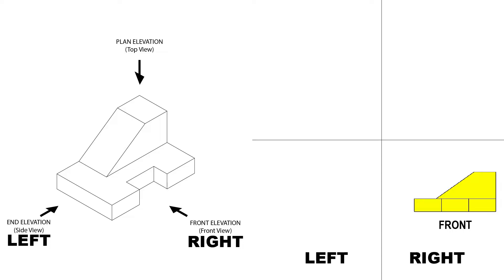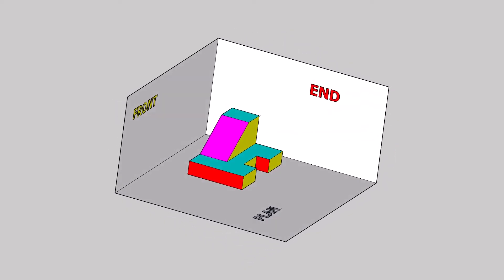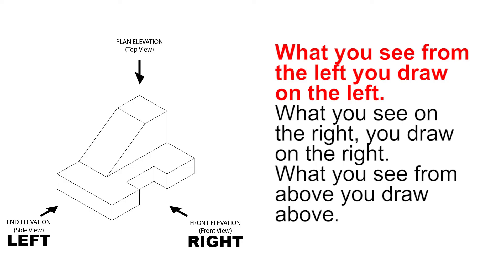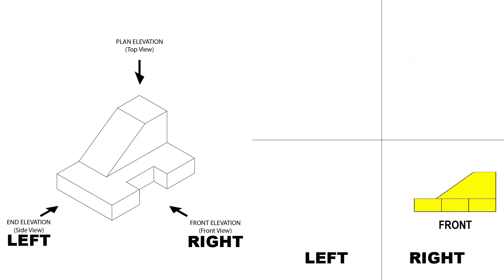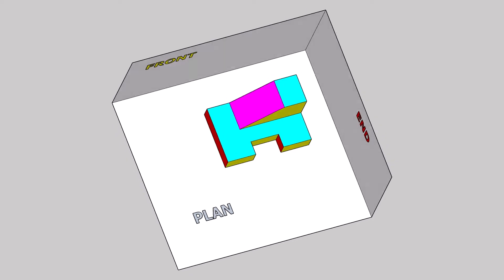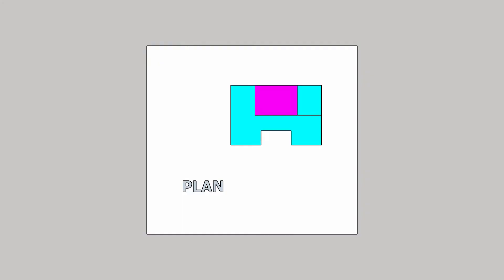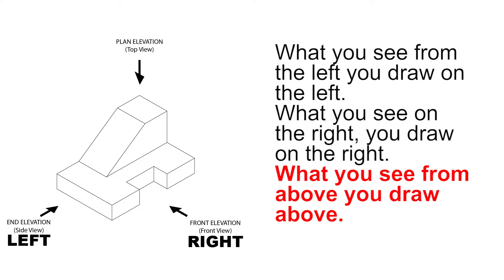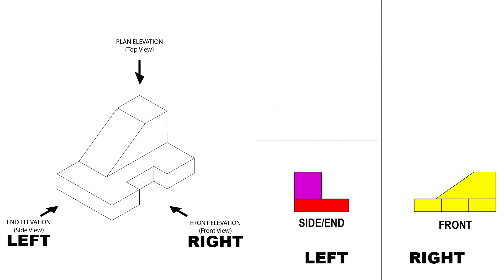We will look at that in a while. Let's watch the animation for the end view. What you see on the left, you draw on the left. The end view is on the left, therefore we will draw it on the left. And finally, let's see the animation for the plan view. What you see from above, we draw above. Therefore, in third angle projection, the plan view will always be above the front view.